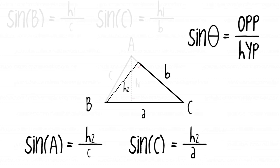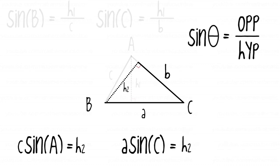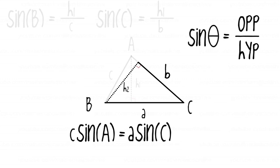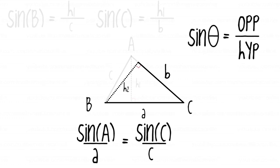So we have two equations — let's take a few more steps. Let's solve each equation for h2. Since both equations are equal to h2, let's set them equal to each other. We eliminate h2 and therefore we have c·sine of A is equal to a·sine of C. Moving c and a to the bottom using algebra, we now have sine of A over a is equal to sine of C over c.